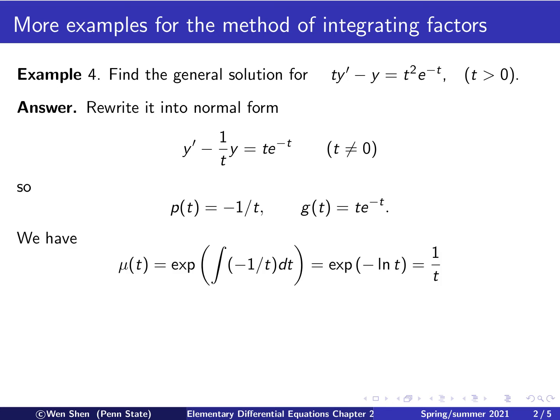Now we can compute the integrating factor mu using the formula: exponential of the integral of p dt. We plug in negative 1 over t and work out the integral, which gives us negative natural log of t. The exponential of that simplifies to t to the power negative 1, which is 1 over t.